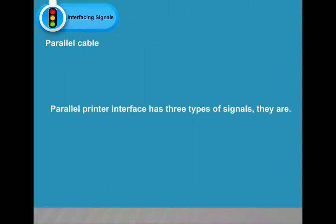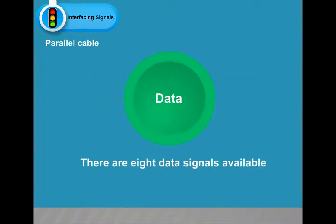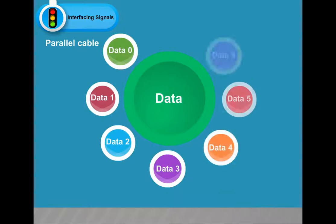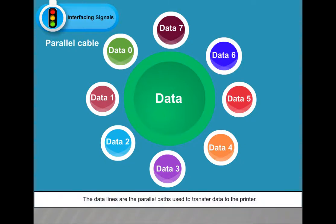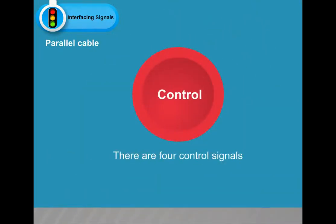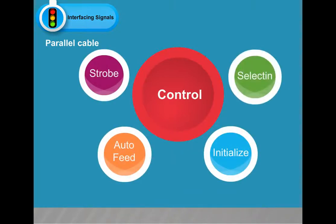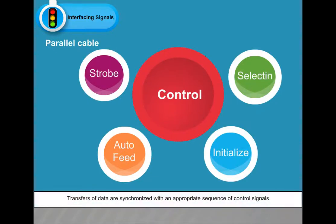Parallel printer interface has three types of signals. Data: there are eight data signals available — Data 0 through Data 7 — which are the parallel paths used to transfer data to the printer. Control: there are four control signals — Strobe, Auto Feed, Initialize, and Select In. Transfers of data are synchronized with an appropriate sequence of control signals.